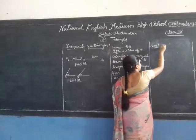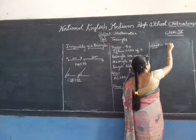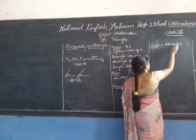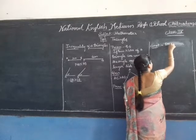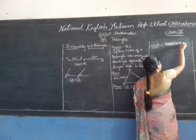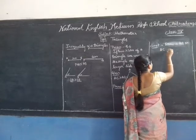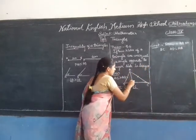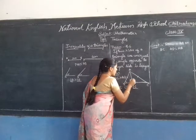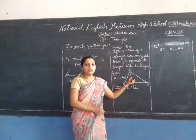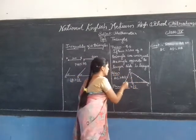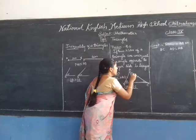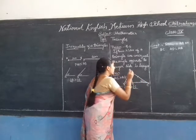Construction: draw a line AD on BC such that AD is equal to AB, making these two sides equal to one another. Label the angles as angle 1, angle 2, angle 3, and angle 4 at the relevant points in the diagram.